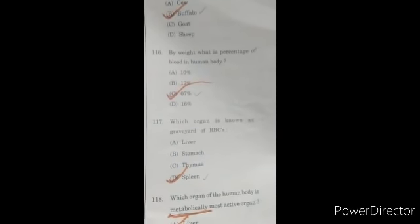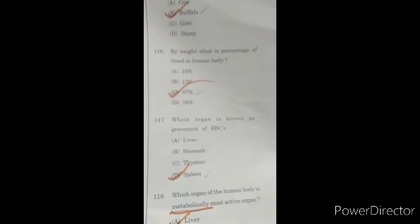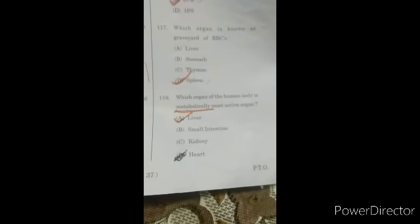Question 116: by weight, what percentage of blood is in human body? C option, 7%. Which organ is known as graveyard of RBCs? D option, spleen. Which organ of the human body is metabolically most active organ? The right option is A, liver.